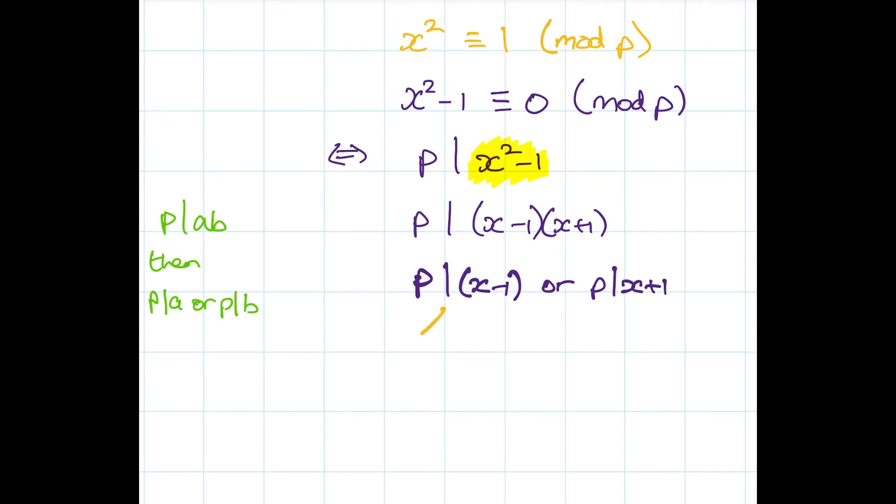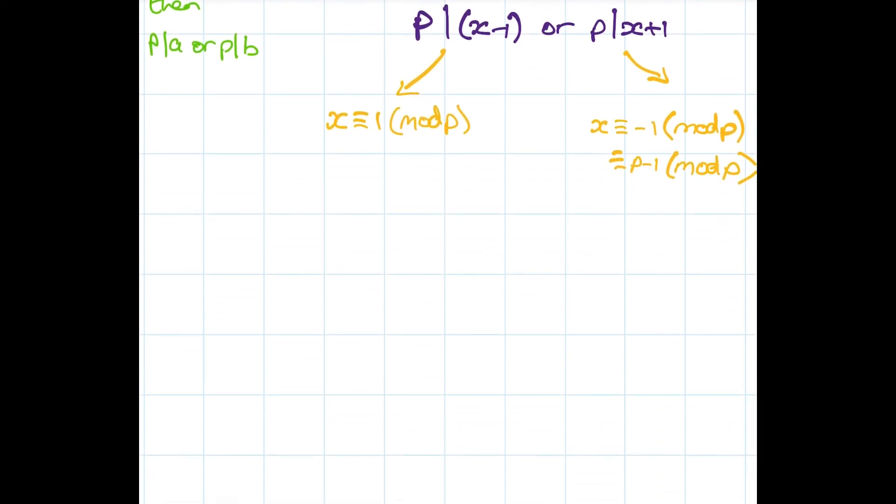Here we can just apply that. We have p divides x minus 1 or p divides x plus 1. Plugging this back into the definition of congruence we get x is congruent to 1 mod p, and x is congruent to negative 1 mod p. Note that bringing this minus 1 back into the world of p we get p minus 1 mod p. So what have we shown? The only elements mod p which are their own inverses are 1 and p minus 1.